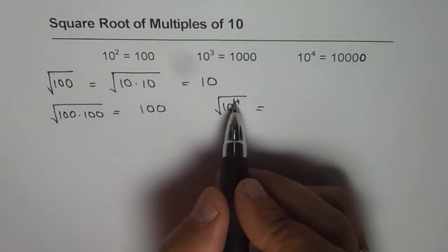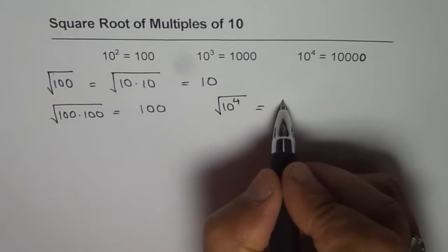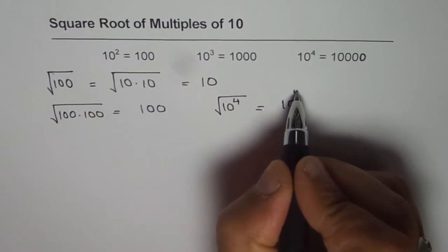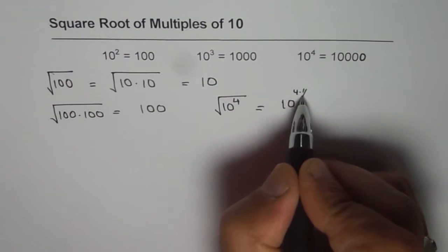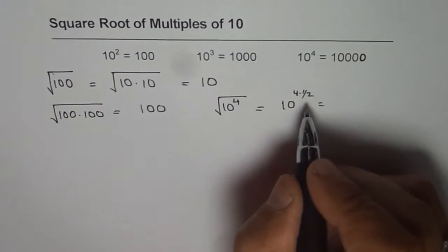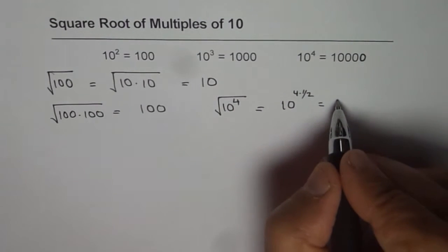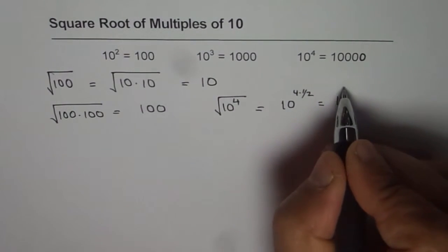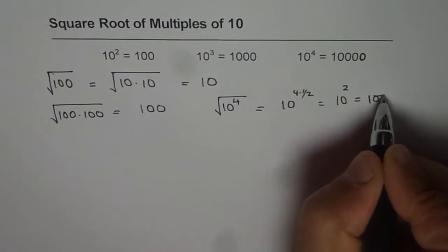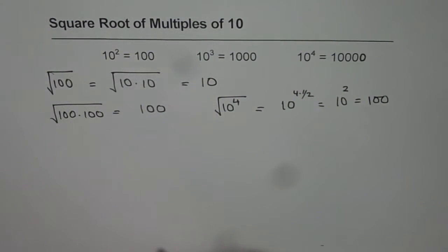So if it is 10 to the power of 4, then the answer is 10 to the power of half of 4. What is half of 4? Half of 4 is 2. So it is 10 squared, which is 100.